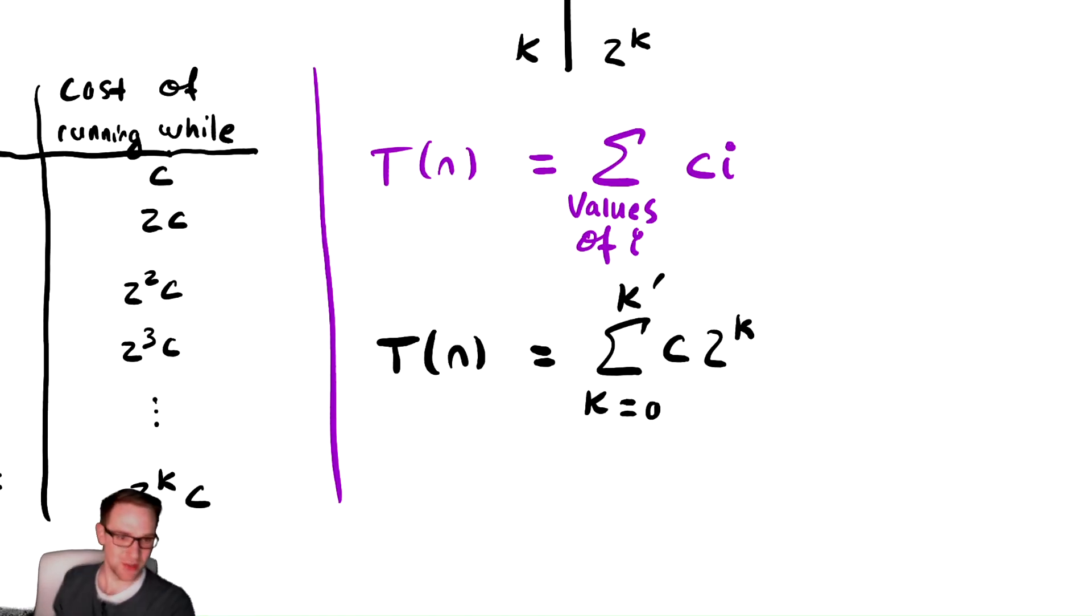So, we're replacing i with 2 to the k, and we're changing the bounds from being i, which is really jank and we don't know how to deal with, to k, which does go from 0 to a nice value.